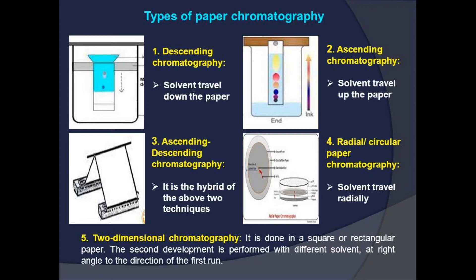There are different types of paper chromatography. First, descending chromatography, where the solvent travels down the paper. Second, ascending chromatography, where the solvent travels up the paper. Third, ascending and descending chromatography, which is a hybrid of the above two. Fourth, radial or circular paper chromatography, where the solvent travels radially. Fifth, two-dimensional chromatography, done on square or rectangular paper, where the second development is performed with a different solvent at right angles to the direction of the first run.